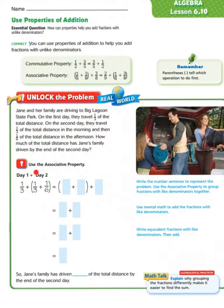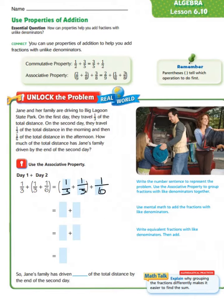Using the associative property, we can set up day one plus, and we group day two, because they did one-third in the morning and one-sixth in the afternoon. Using the associative property, we can change the grouping so that within the parentheses we have one-third plus one-third, with the one-sixth outside. This makes it a little easier, because now we have two fractions — one-third and one-third — with the same denominator, so we don't have to do anything extra to add them together. We just add our numerators.